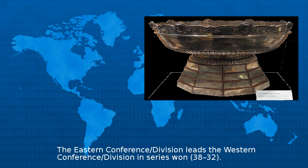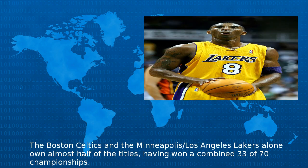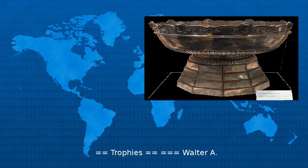The Eastern Conference leads the Western Conference in series 38–32. The defunct Central Division won one championship. The Boston Celtics and the Minneapolis/Los Angeles Lakers alone own almost half of the titles, having won a combined 33 of 70 championships.